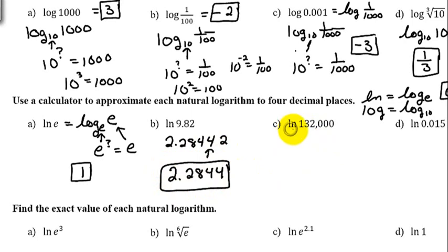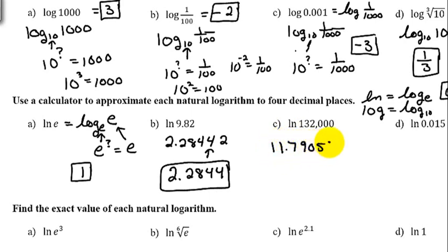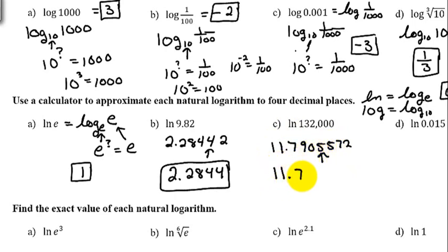The next example is the natural log of 132,000. Push the ln button on your calculator and type in 132,000. You should get 11.7905572 and more digits. We want four decimal places, and the number immediately following the 5 is a 5 — since it's five or bigger we round up, giving us 11.7906.